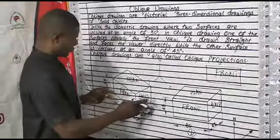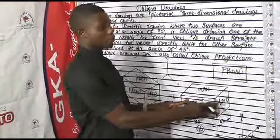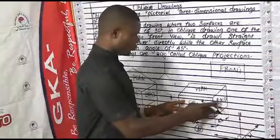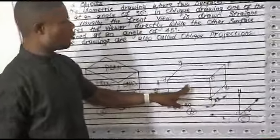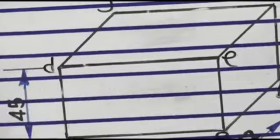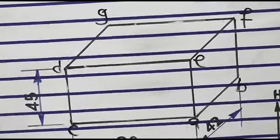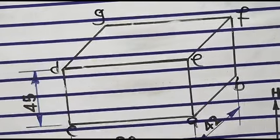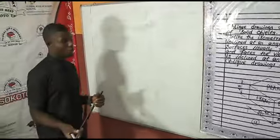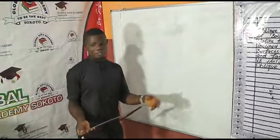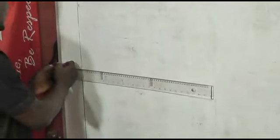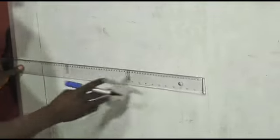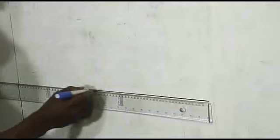We are going to construct this oblique drawing on the board so that you can follow and draw with your instruments at home. Watch the steps and follow carefully. You are going to make use of your drawing instruments and materials. You can use your ruler or T-square to draw the horizontal line. The first thing we are going to do is draw a horizontal line — the same first step as in isometric drawing.